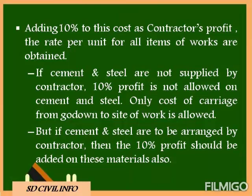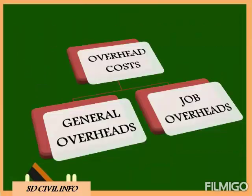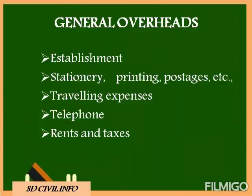Ten percent profit may be added over the whole cost of labors and materials including cement and steel, if it is not specified that these will be supplied departmentally. Overhead cost includes general office expenses, rents, taxes, supervision, and other indirect expenses not productive on the job. Miscellaneous overhead expenses may fall under two heads: general overheads and job overheads. Expenses under general overheads include establishment — that is, expenses for office staff — stationery, printing, postages, traveling expenses, telephone charges, and rents and taxes.